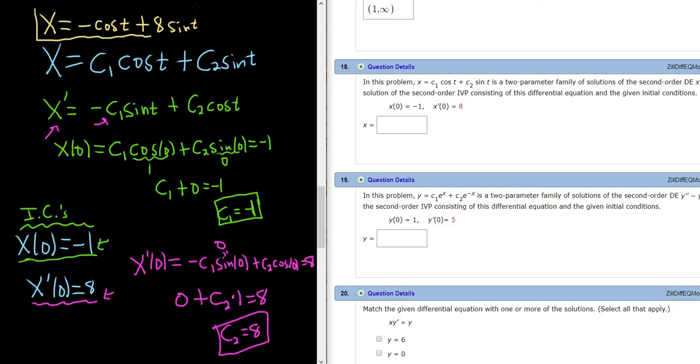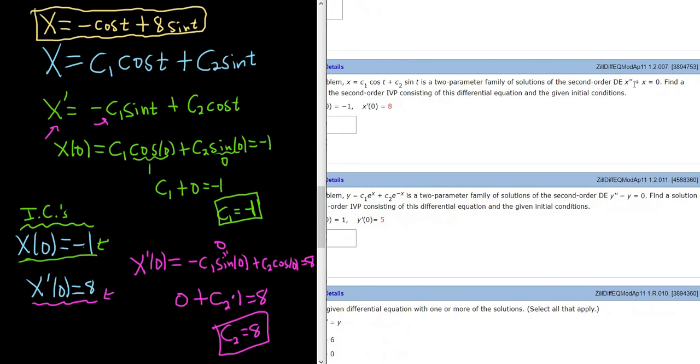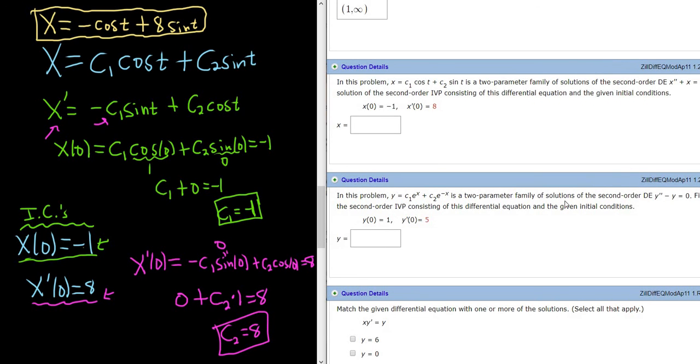So again, the differential equation is this one: x double prime plus x equals 0. So when you consider this differential equation together with these two conditions, you get what's called an initial value problem. So if you solve this differential equation, you get x equals c1 cosine t plus c2 sine t.